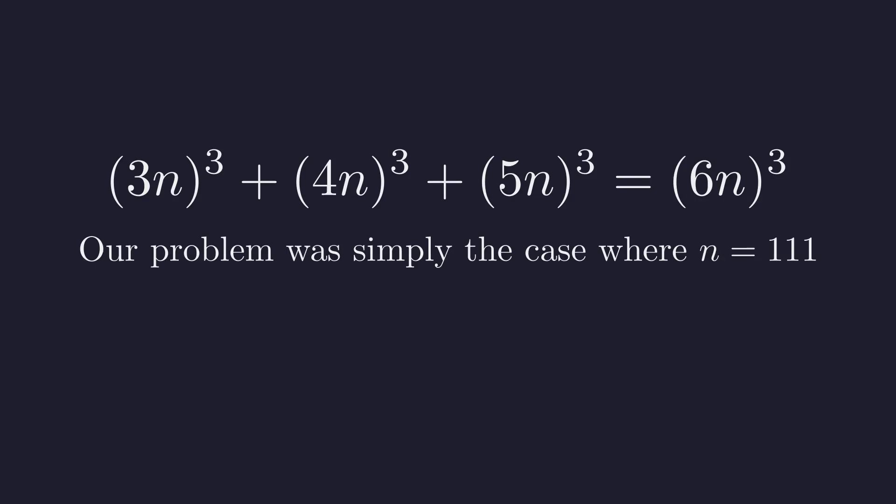So what have we actually discovered here? This beautiful pattern isn't just some numerical coincidence. What we've stumbled upon is a beautiful general identity. For any number n, the sum of 3n cubed plus 4n cubed plus 5n cubed always equals 6n cubed. This works for any value of n whatsoever. Our original problem was just the special case where n equals 111. By recognizing this underlying structure, we transformed what looked like a computational nightmare into an elegant algebraic insight.